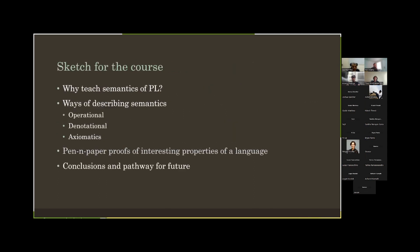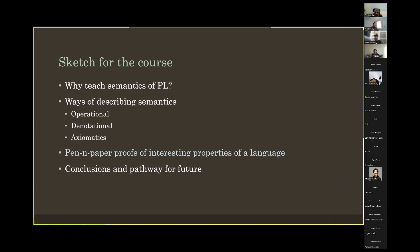Once this started, I had some course structure in mind. The idea was: why even teach semantics of programming languages, then describe three popular ways — operational semantics, denotational semantics, and axiomatic semantics. Traditionally, after defining the semantics, you go ahead with pen-and-paper proofs of interesting properties about the language, then conclude and show a pathway for the future. That was the sketch of the course I had in mind.